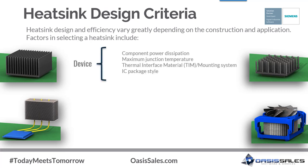Let's discuss factors that influence heat sink thermal design. At the device level, factors include component power dissipation and maximum junction temperature. The more heat a component dissipates, the more effective the heat sink needs to be at removing it to maintain the maximum allowed junction temperature. Thermal interface material (TIM) and IC package die affect the temperature rise from the die to the heat sink base. Higher thermal resistances require the heat sink to compensate for the additional temperature rise.